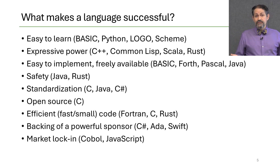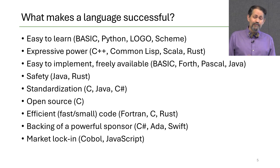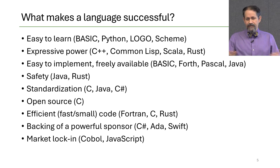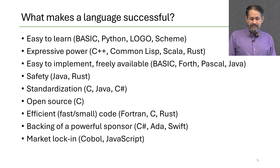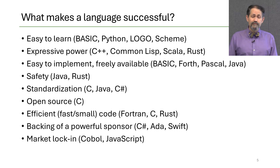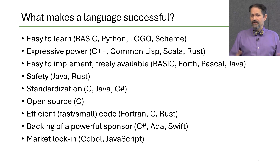What makes a language successful? Some languages are easy to pick up — like BASIC, Python, Logo, or Scratch. Some are very powerful: C++, Common Lisp, Scala, and Rust all have interesting and powerful constructs for writing sophisticated programs. Some programming languages are easy to implement and freely available — Forth is simple and was used on many early machines, and Pascal was famous for a bootstrapped sequence enabling implementations quickly on many different machines. Java was also written in this way.